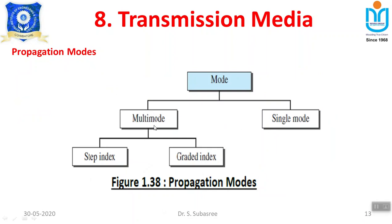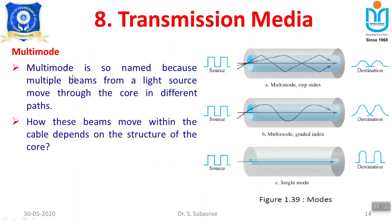The propagation mode represents the traveling mechanism of light. Under multi-mode, there are two categories: step index and graded index. In multi-mode, the light source generates multiple beams that move through the core. In step index, you will see high and low straight-line reflections — that is called step index. The curved model of reflection is called graded index.